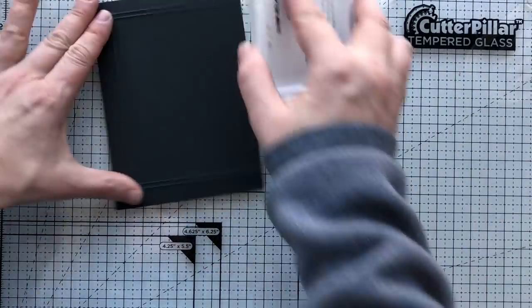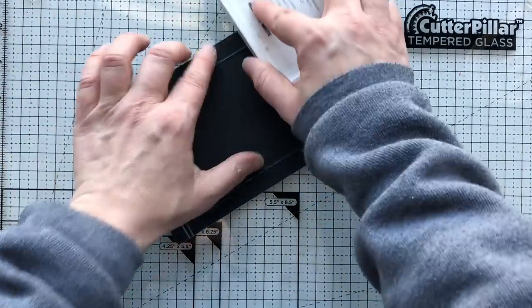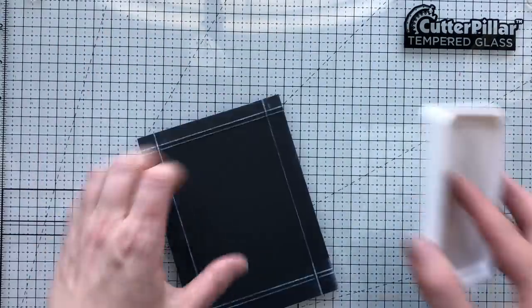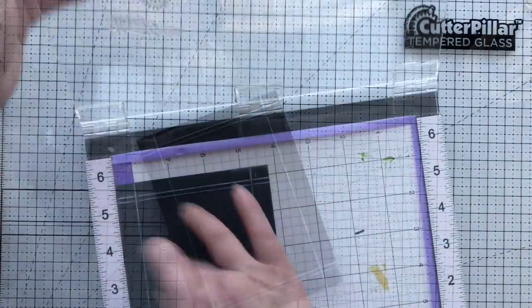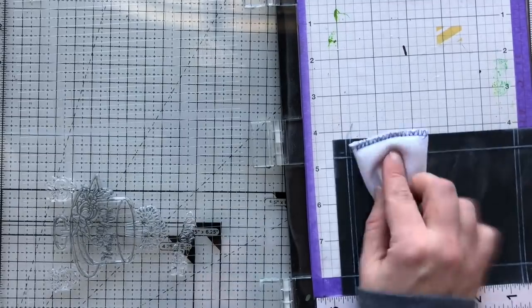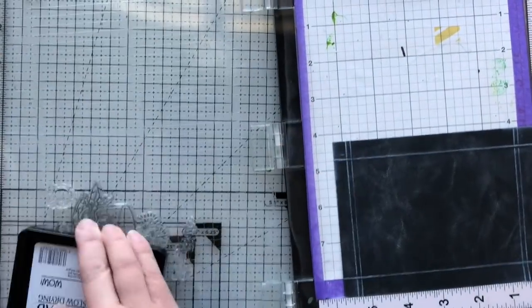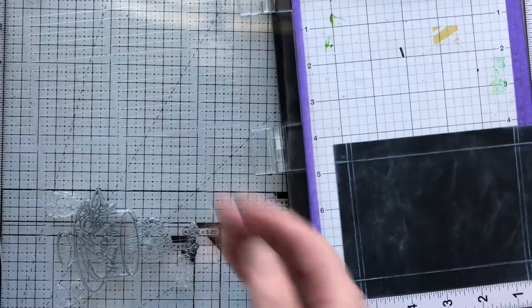You can do tons of different designs with this. The sky's the limit. I just did two lines on one side and one line on the other, and then I took a white ink pad and very gently swiped over where those score lines are to really accentuate those lines with white since it's a black card base.